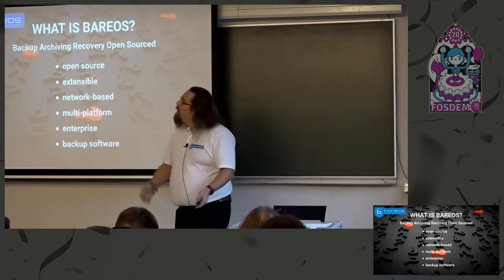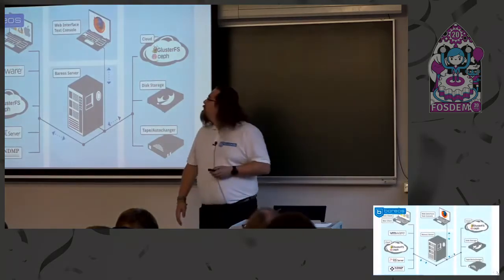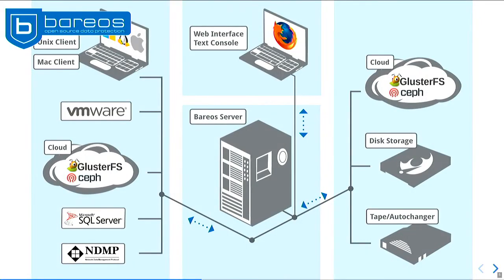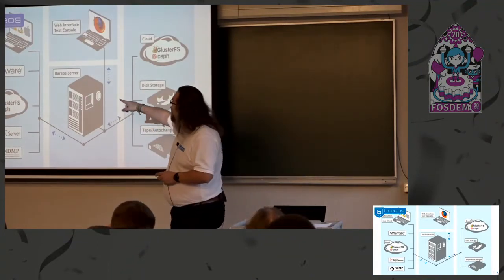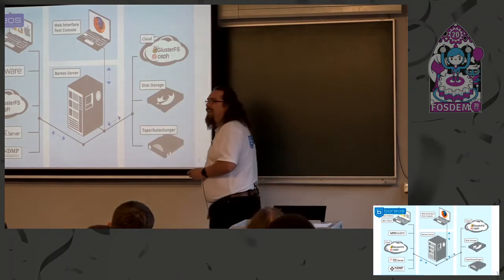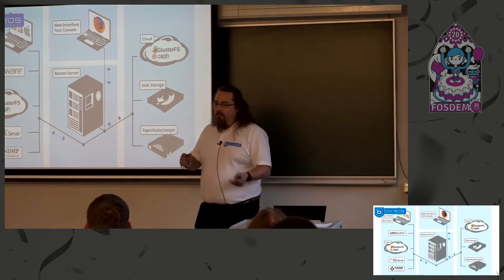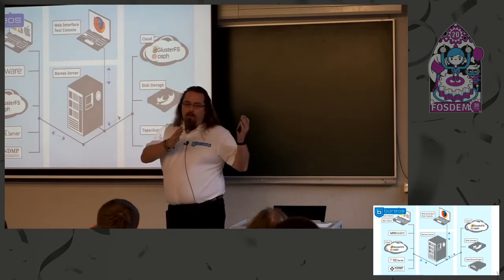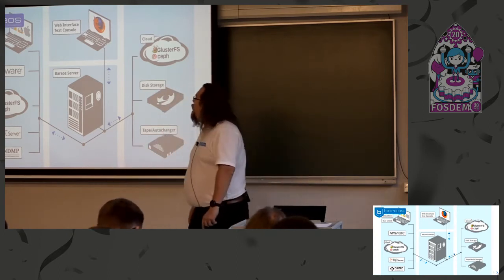So, what is Bareos? Basically, it moves files from a source to some destination, and once you've lost the files on the source you can move them back. This is an overview diagram of the architecture. The main component is the Bareos director, which does the whole scheduling, and most of the configuration goes there. What backup sets should be done, when, from where, to where — all managed by the director.